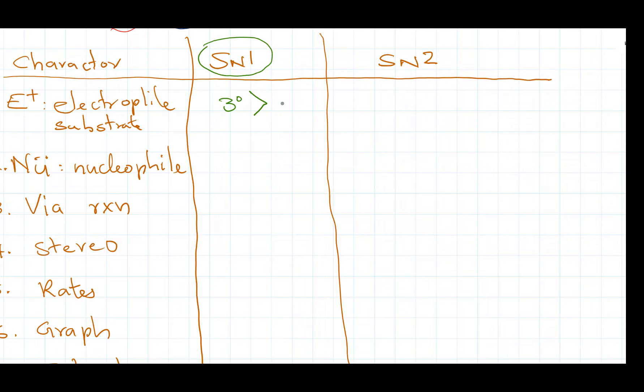Now, the first thing, the electrophiles in SN1, the best one is tertiary with three R groups and primary is the worst and secondary would be sitting on the fence. The best is tertiary, worst is primary and secondary is on the fence.